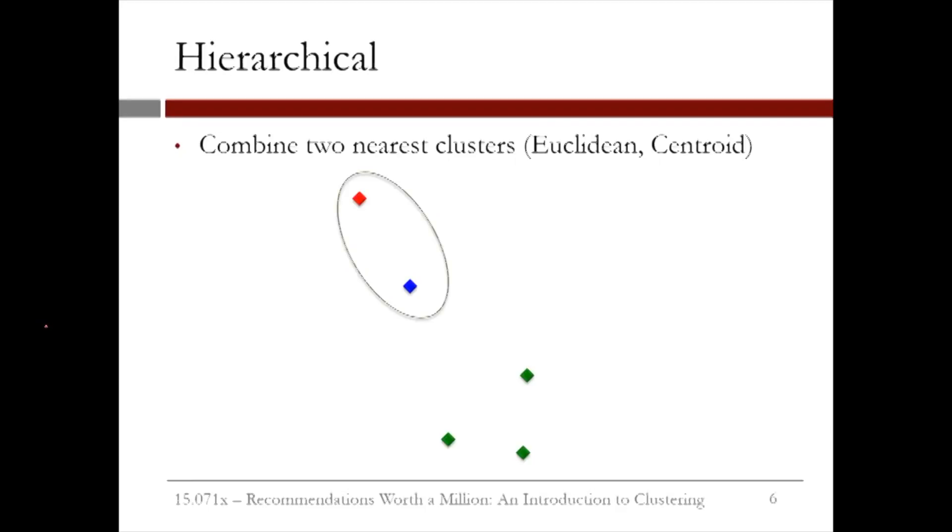Now the two nearest clusters are the red and blue clusters. So we would combine these two clusters into one cluster, the red cluster. So now we have just two clusters, the red one and the green one.